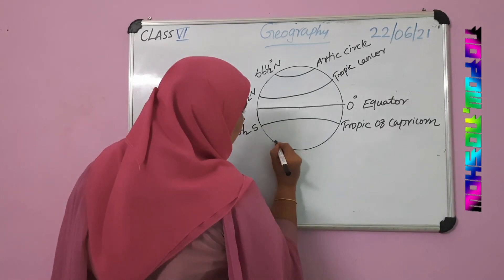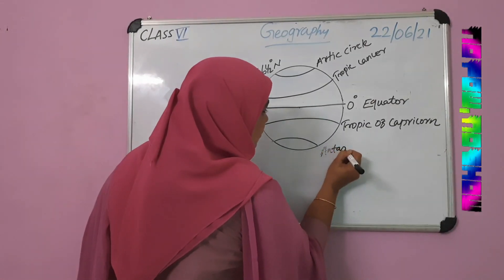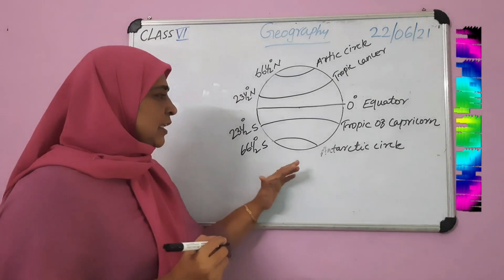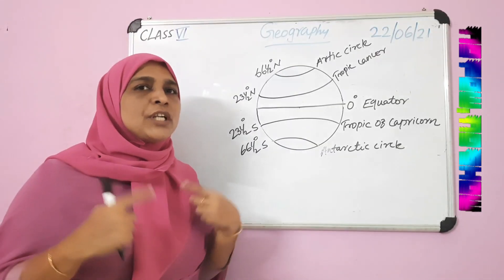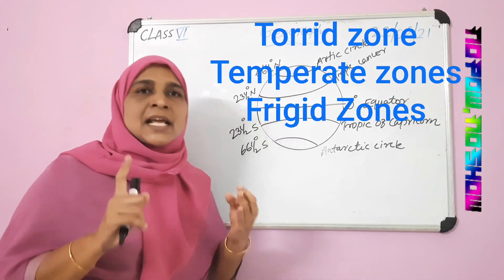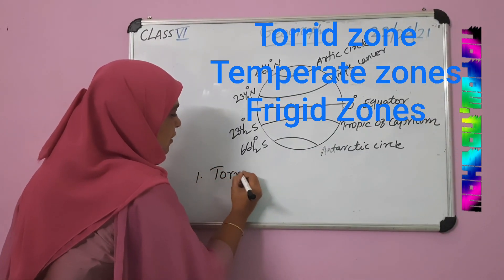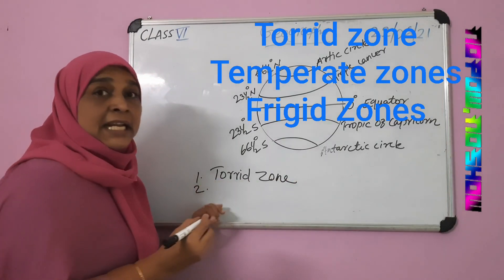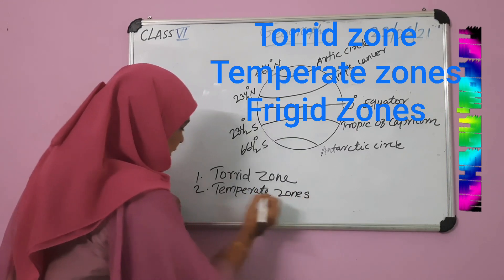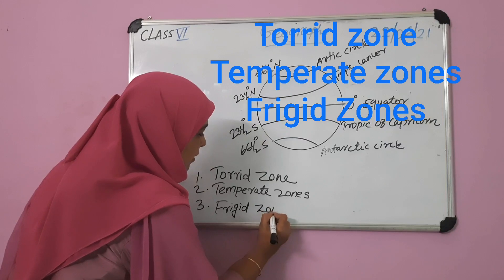Then this is the Antarctic Circle — 66 and a half degrees south. These latitudes help us to divide the earth into three heat zones: first one, torrid zone; second one, temperate zones; and third one, frigid zones.